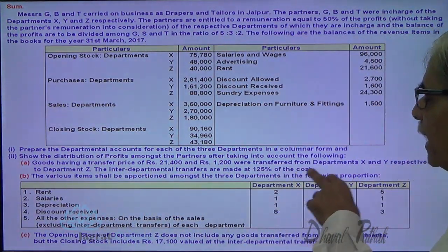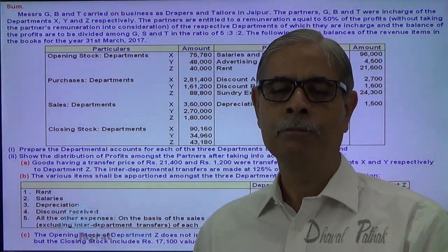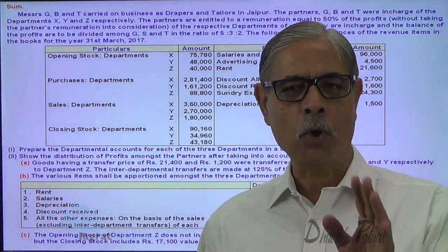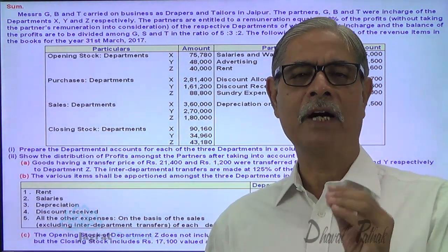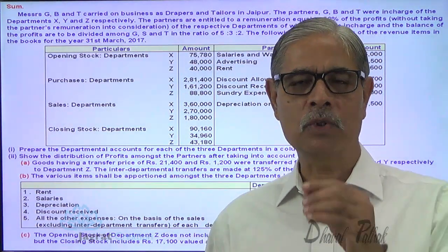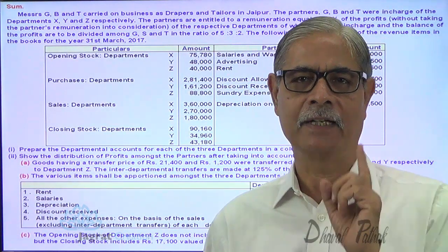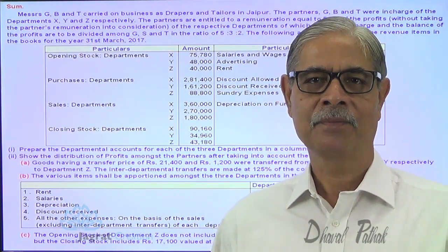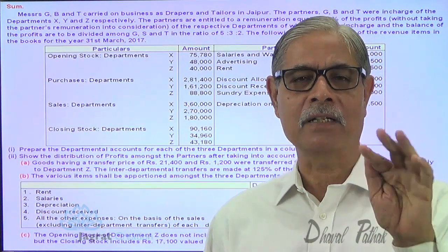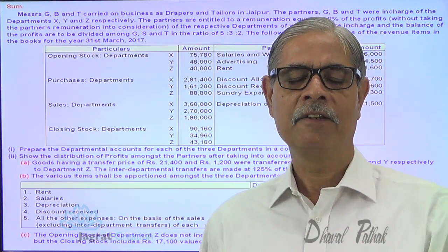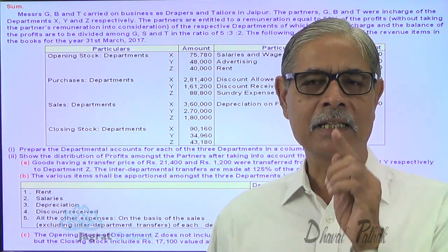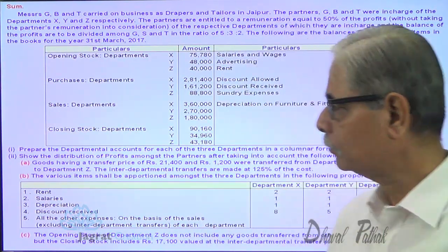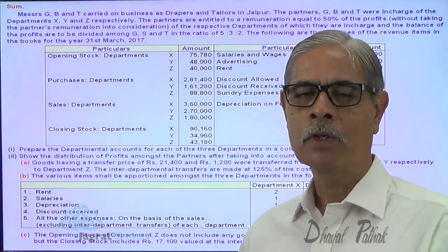The inter-department transfer is made at 125% of the cost. This is an important point. When goods are transferred from one department to another at cost, the problem of unrealized profit does not arise. But when goods are transferred at a profit, and some of those goods remain unsold in the transferring department, the goods left with the transferring department hold an element of profit which is unearned by the owner, because all departments are run under common ownership. So unrealized profit calculation is an important point of this sum.